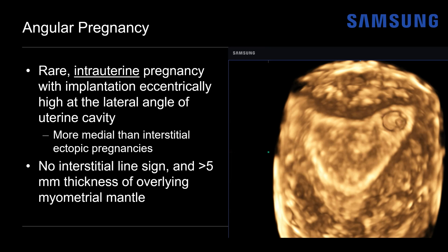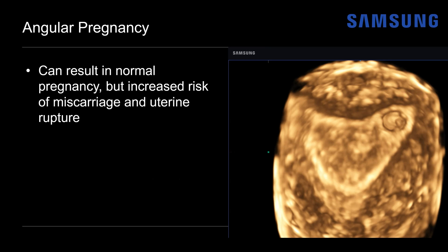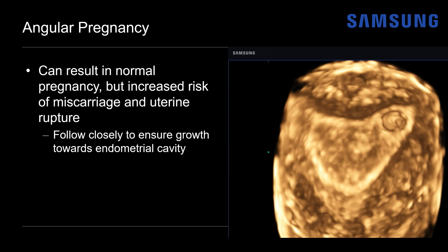Notice that this angular pregnancy is more medial in location. As we saw on the cine images, we will not see an interstitial line sign and there will be more than five millimeters of myometrial thickness overlying. These pregnancies can be normal and result in a live birth, but there is an increased risk of miscarriage and uterine rupture. Unfortunately, this patient did miscarry a couple of days after the ultrasound. Regardless, these usually need to be followed closely to ensure growth towards the endometrial cavity as opposed to towards the interstitial portion of the tube.